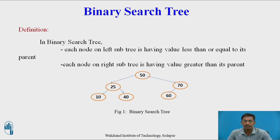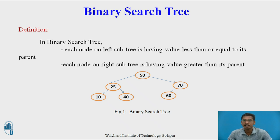This is an introductory part before actually going to threaded binary tree. We will see what is a binary search tree. In a binary search tree, every node on the left subtree has a value less than or equal to its parent, and every node on the right subtree has a value greater than its parent. So it is a special case of binary tree.